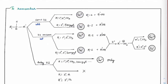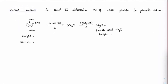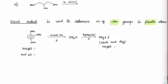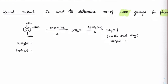The last topic is the Zeisel's method to determine the number of OMe (methoxy) groups present. This is a method to determine the number of OMe groups present on phenolic ethers. For instance, if we have n number of OMe groups, the given sample — some phenoxy ether sample — is taken as w grams, and we know the molar mass of that particular component.